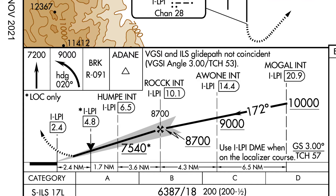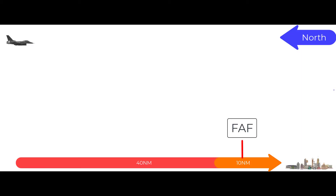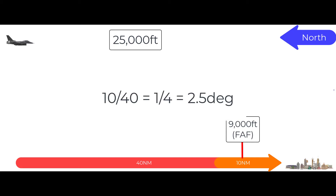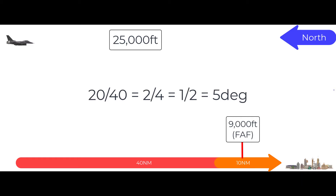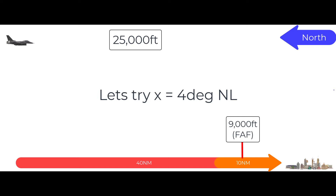Looking at this approach, the FAF appears to be about 8 miles from the field, so I want to be down 5 miles before that — meaning I need to be at FAF altitude 13 miles prior to Sea Springs Airport. Same situation as before: 50 miles from Sea Springs, 16,000 feet to lose, coming in from the north. Subtract about 10 miles from 50, so I have 40 miles to lose 16,000 feet. We know 10,000 feet in 40 miles is 2.5 degrees, and 20,000 feet in 40 miles is 5 degrees, so 16,000 feet should be around 4 degrees nose low.